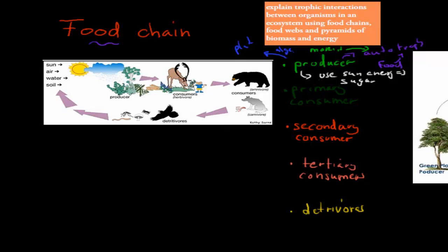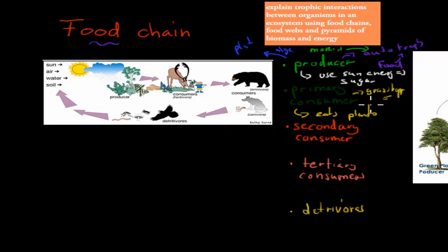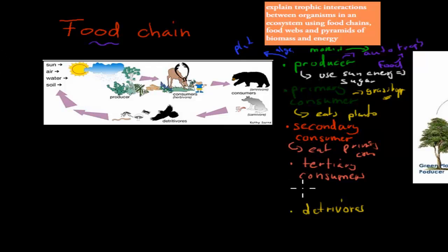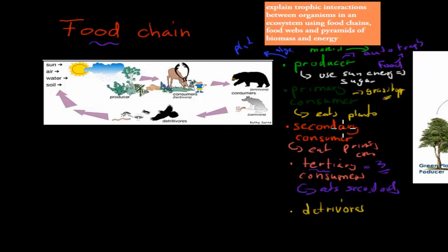Primary consumers are the ones that eat the actual plants. Producers make sugar and their own food - these are usually plants. Primary consumers eat plants; examples include grasshoppers or any other insect or animal that might eat plants. Secondary consumers are the ones who eat primary consumers - for example, if the primary consumer is the grasshopper, then the secondary consumer would be the mouse. The mouse eats the primary consumer. And the tertiary consumer eats the secondary consumer - tertiary comes from the word three, so it's the third consumer. For example, the tertiary consumer could be the fox, and the fox eats the mouse.